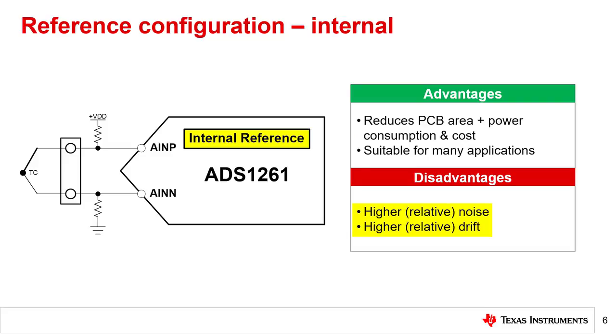However, in general, internal references have higher noise and higher drift compared to precision external references, making them less suitable for some high-precision, high-accuracy systems.